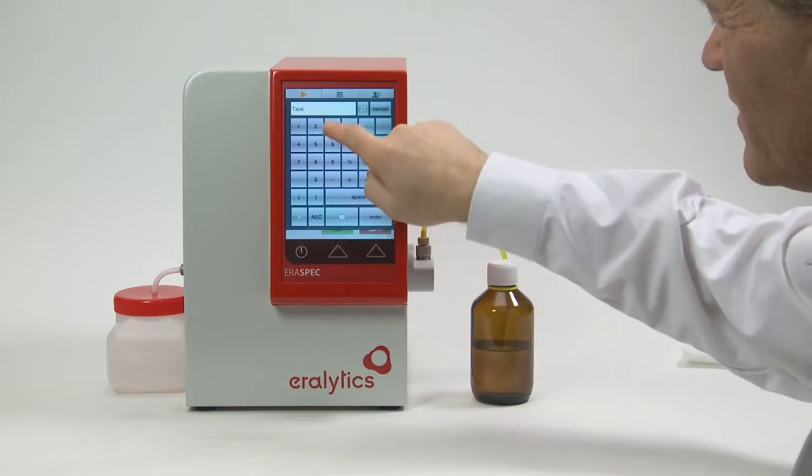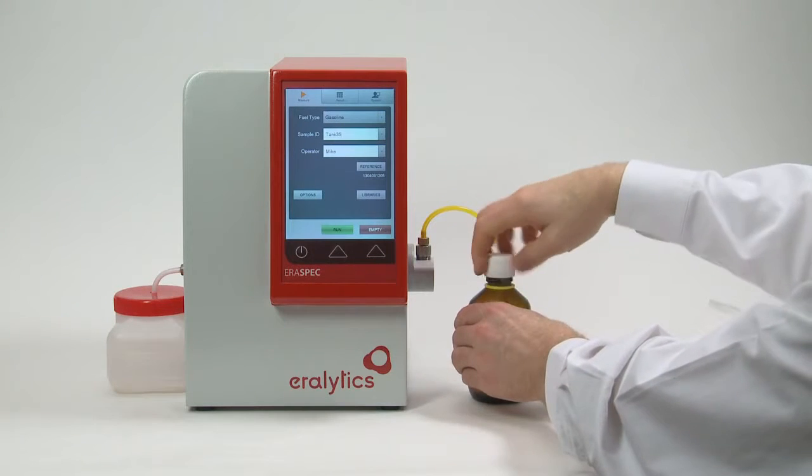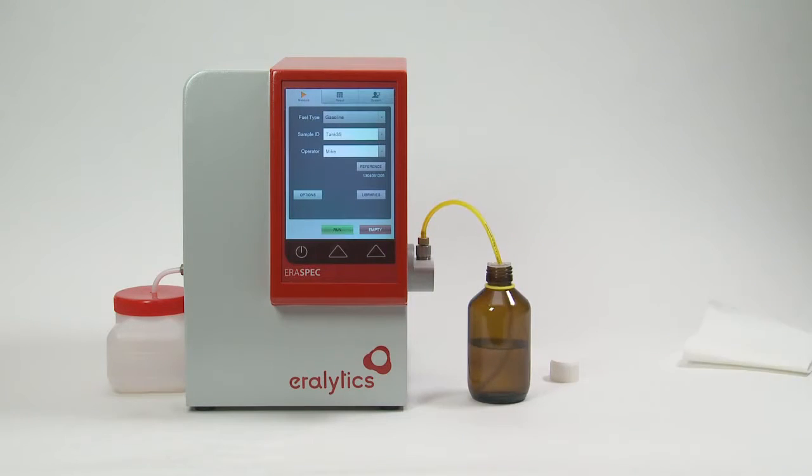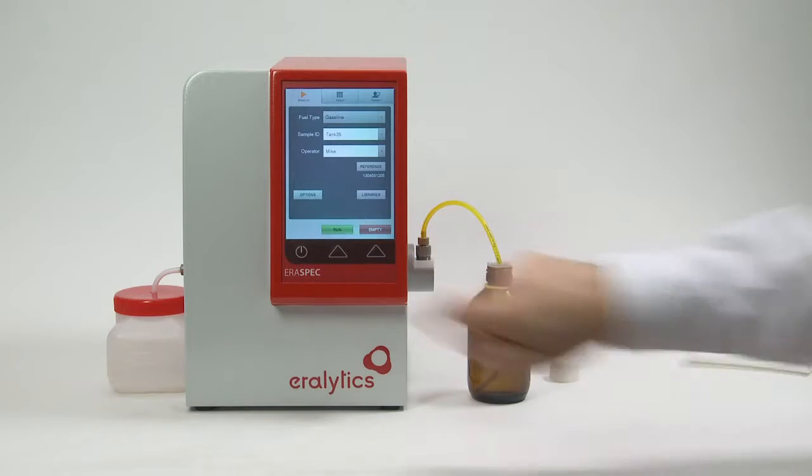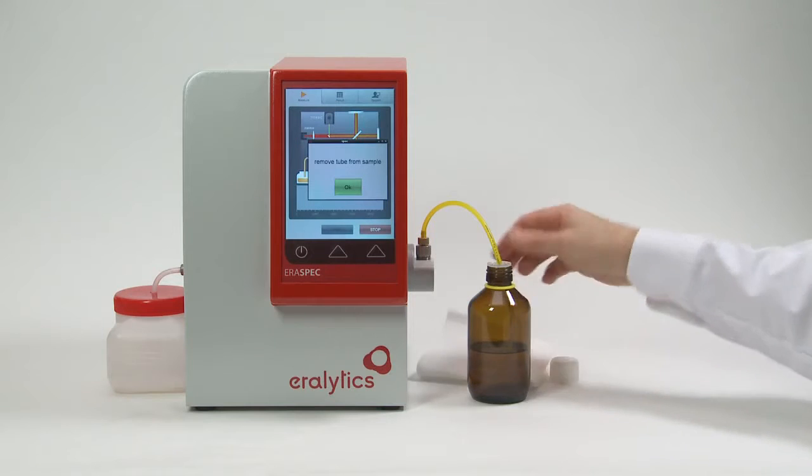Enter the sample ID and the operator on the pop-up keyboard or select them from the drop-down list of previously entered names. Then insert the filling tube into the sample container and press Run. The instrument automatically draws in about 12 to 15 milliliters sample to rinse and fill the absorption cell and the built-in density meter. At the same time, the IR source is switched on.